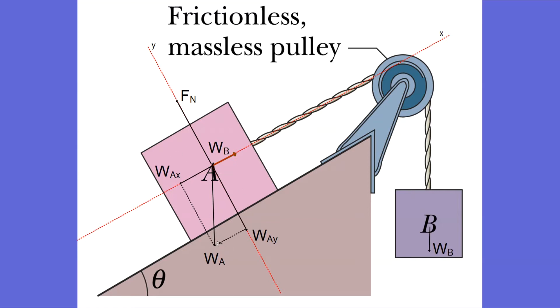I've added the forces. We have the weight of block A pointing vertically downward, the weight of block B also vertically downward, and the normal force from the surface pointing up perpendicular to the surface. Because this is a frictionless massless pulley, this weight of B is transferred through the tension in the string to the x direction pulling on block A.